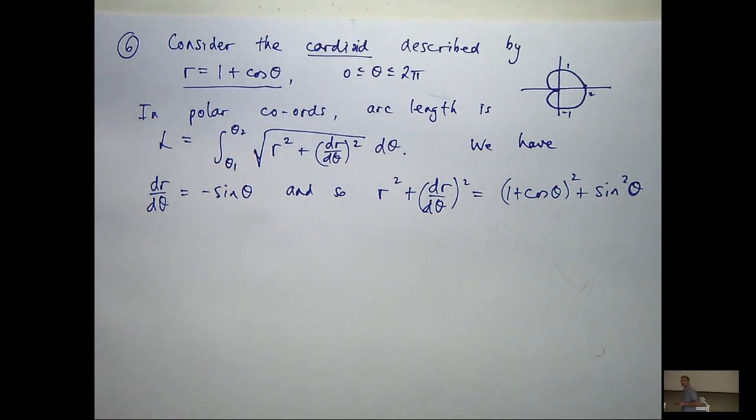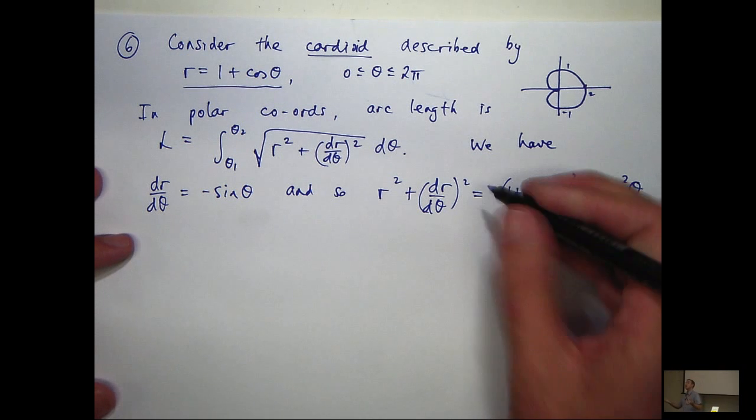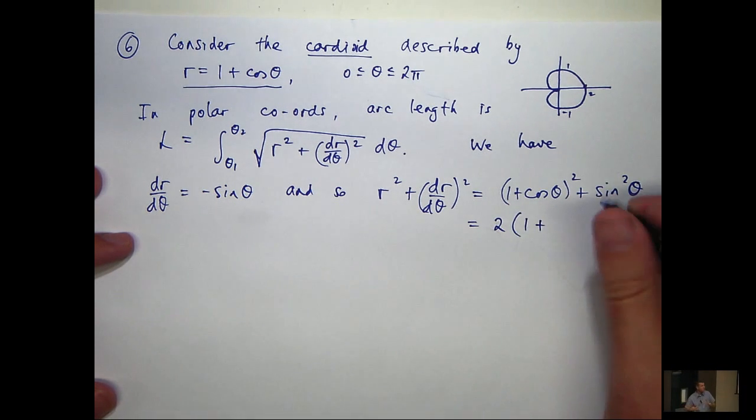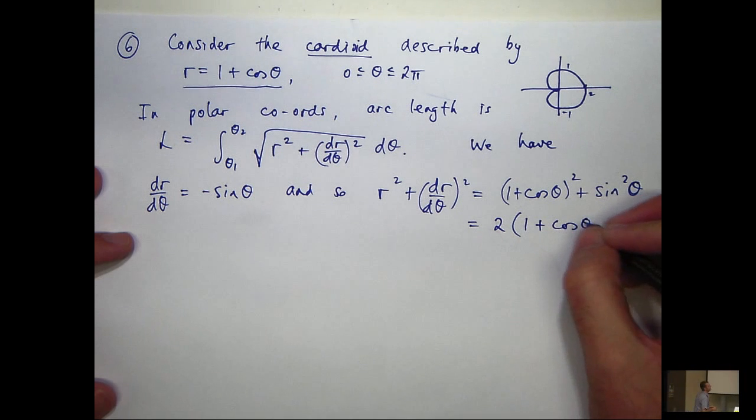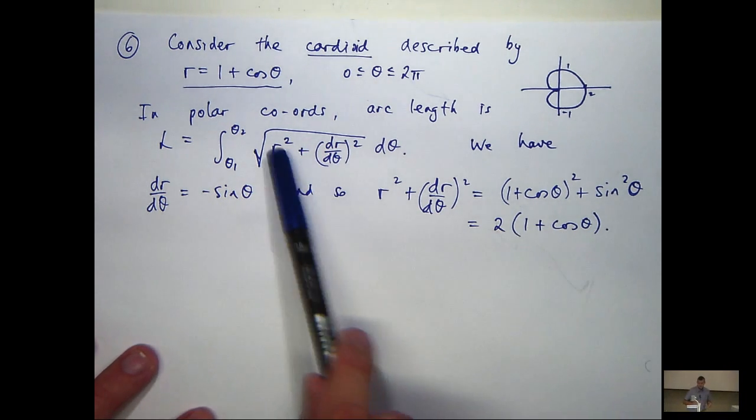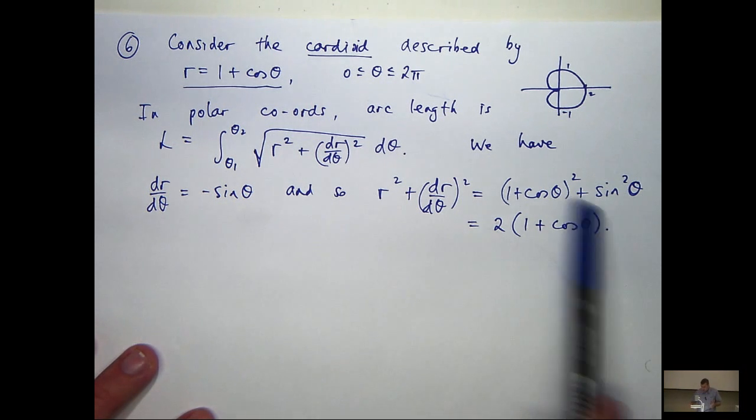Now when we expand the bracket, we're going to get cos squared plus sine squared equals one. So here we're going to get two times one plus cos θ. Now we're going to have to square root this and integrate it.